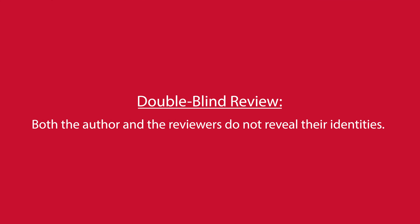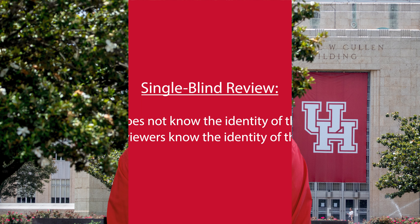One method is double-blind reviewing, where both the author and the reviewers do not reveal their identities. This is typical of the review process in academic journals.